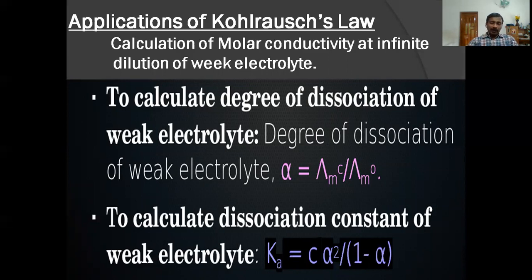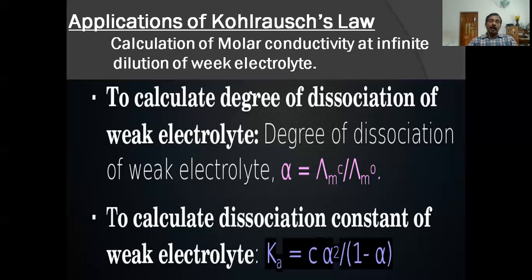The second application is to calculate the degree of dissociation of a weak electrolyte. Degree of dissociation α equals λMC divided by λM⁰, where λMC is the molar conductance at the given concentration C, and λM⁰ is the molar conductance at infinite dilution. At a given concentration you can measure molar conductance, while molar conductance at infinite dilution can be calculated using Kohlrausch's law, allowing you to calculate α.